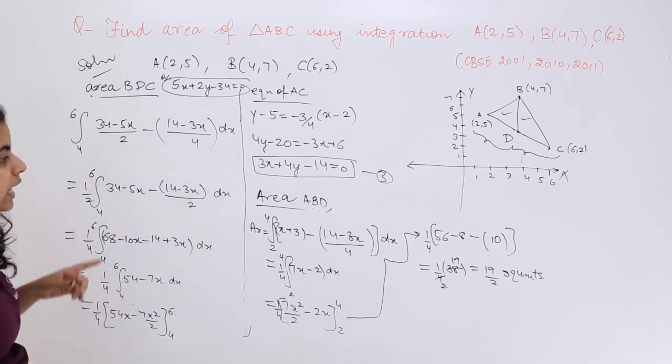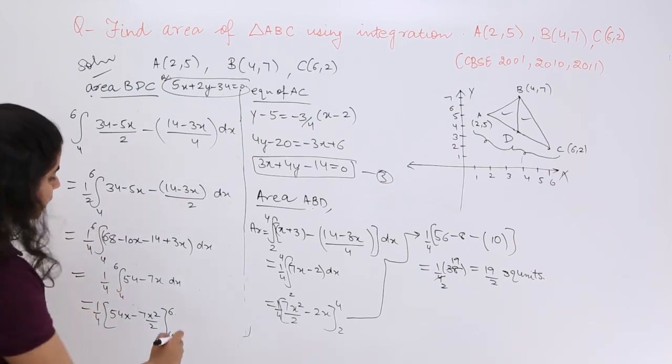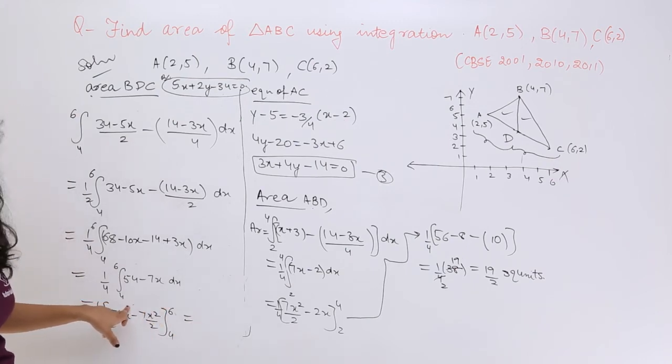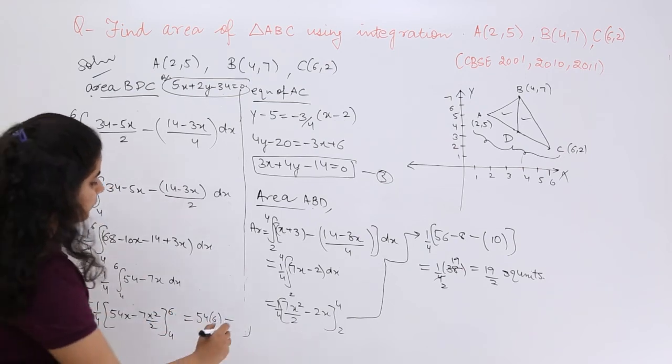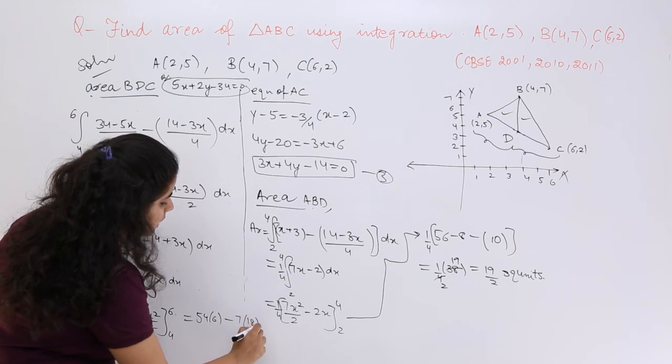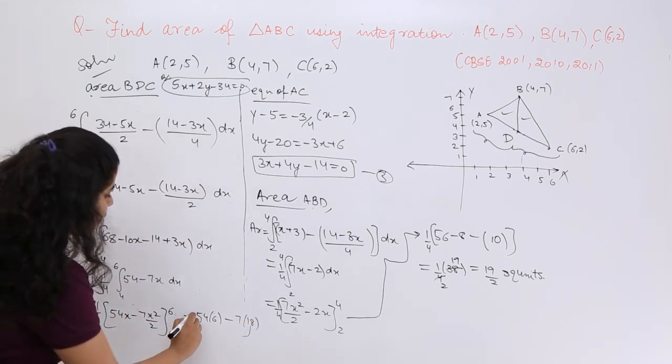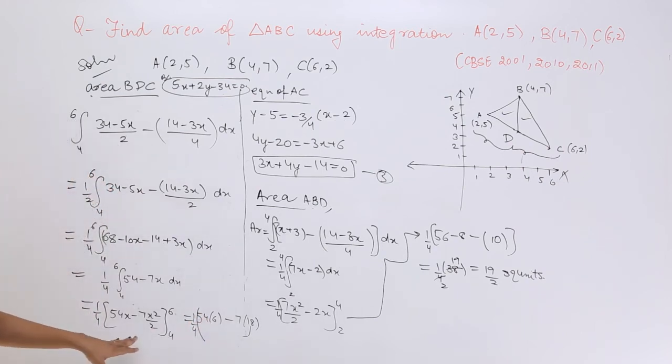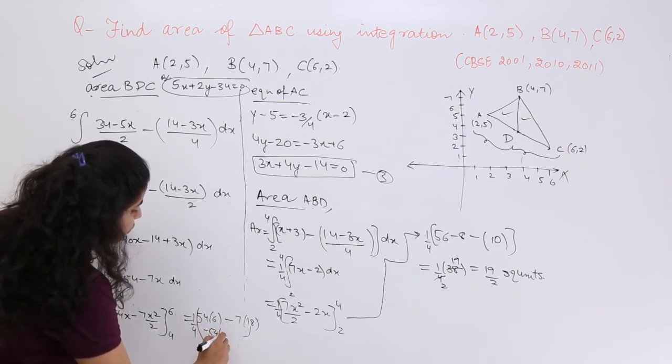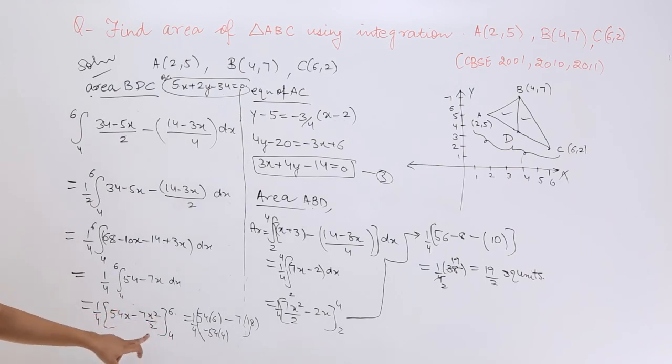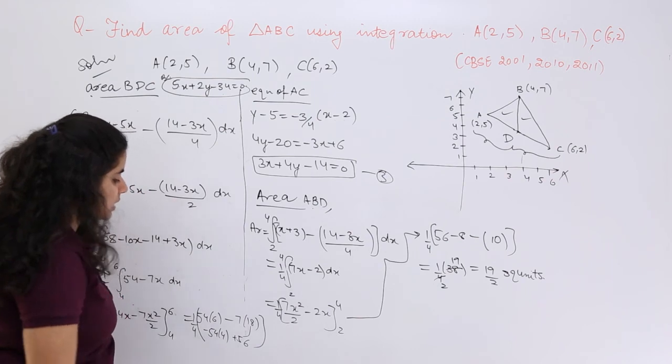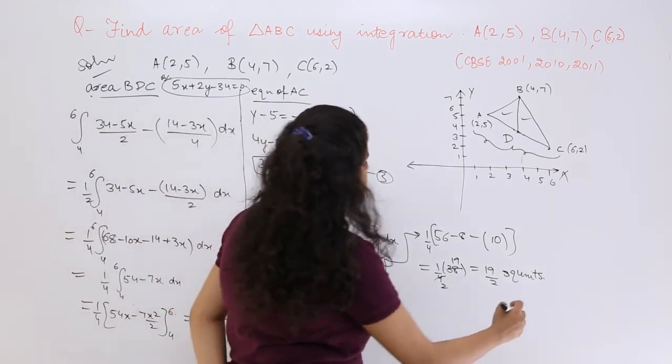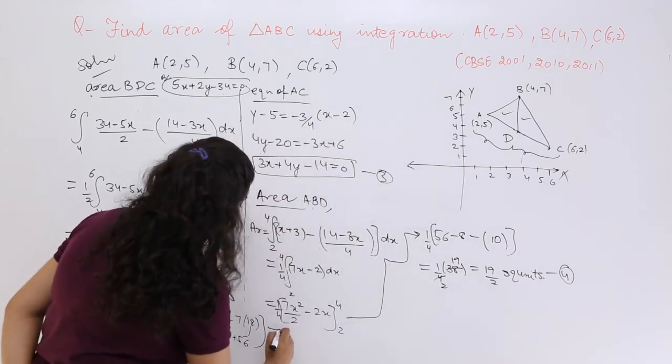As you have seen that I have done till here, let me again put the limits. When I put 6, it should be 54×6 minus 7×36/2 which is 18. Then you have to put 4. 1/4 is already outside. So you have to put 4: minus 54×4. Then you have to again put 4 over here. So 4×4 is 16/2, 16/2 is 8, 7×8 is 56. So it is 56. So as you can see you will be solving it further.